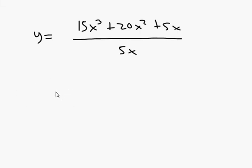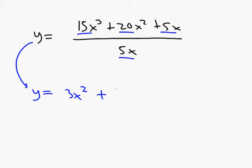One thing someone may have done is decided to simplify this first. You have a luxury here — 5x will divide each of these terms. So we can rewrite the original function: 15x cubed divided by 5x is 3x squared, 20x squared divided by 5x is 4x, and 5x divided by 5x is 1. You can simplify the original function first and then take the derivative. When we do that, y prime is 6x plus 4.